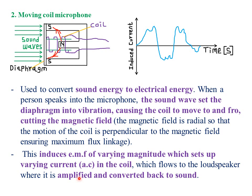If you observe large speakers, they usually have some small holes, and inside there is a hollow region containing the diaphragm. The small holes ensure that air is trapped into the diaphragm. When more air is trapped, more air is set into vibration, hence the sound produced is loud. So the induced EMF of varying magnitude sets up the varying AC current in the coil, which flows to the loudspeaker where it is amplified and converted back to sound waves that can be detected by the human ear.